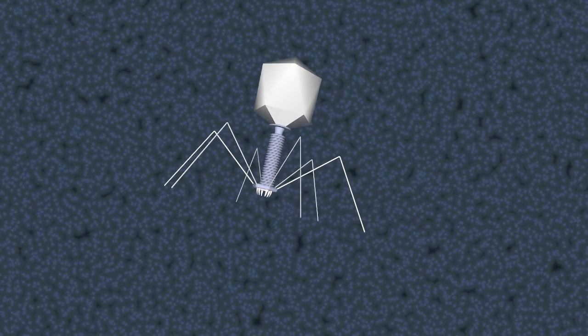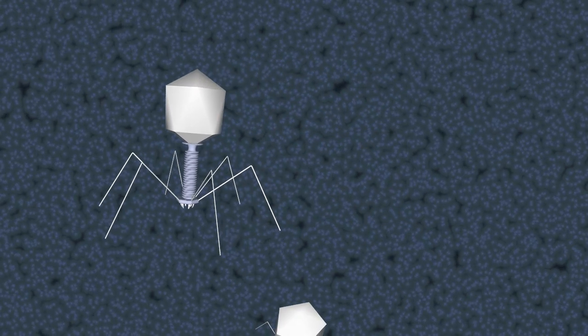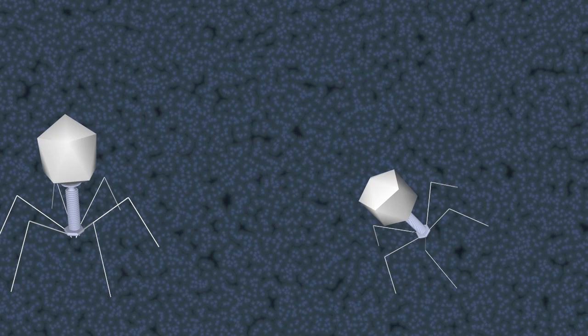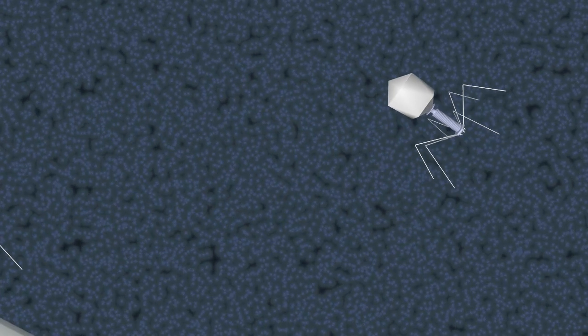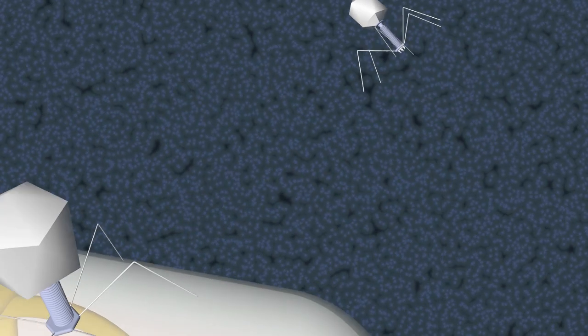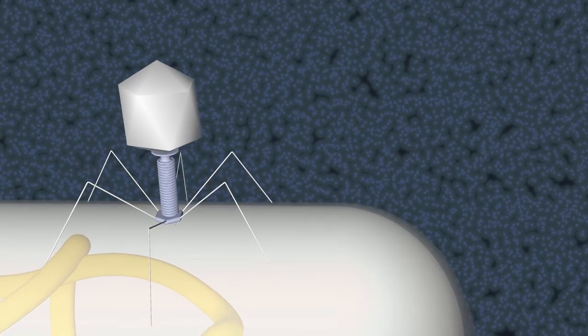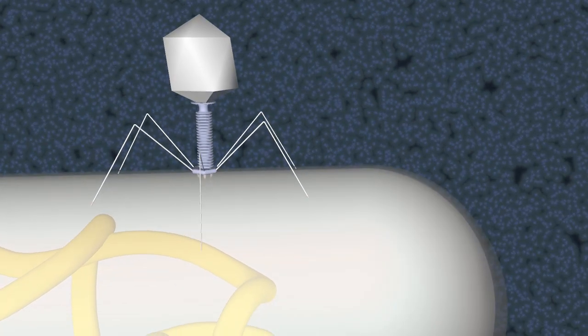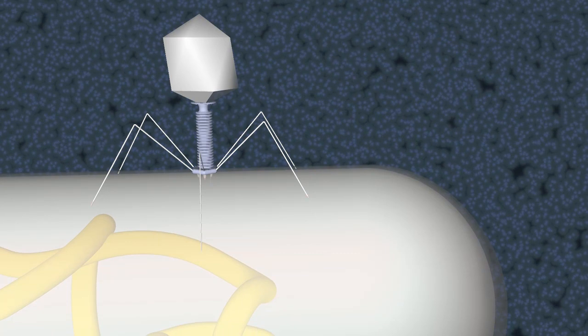In another case, viruses play a role in genetic exchange between bacteria. Bacterial viruses, or bacteriophages, sometimes just called phages, ordinarily attach themselves to bacterial cells and then inject their genetic material into the cells.